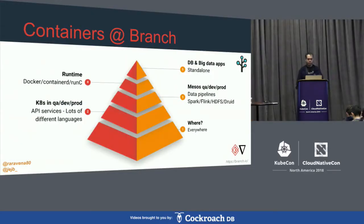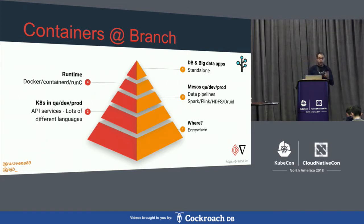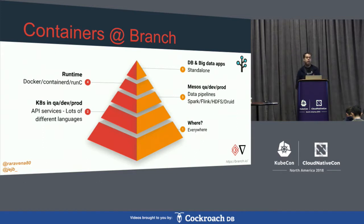At Branch, we run containers everywhere. We run Kubernetes in all kinds of environments: QA, development, and production, with server and API services in all kinds of different languages. We also run Mesos — some of our data pipelines run on top of Mesos with Spark, Flink, and Druid. Our main runtime is Docker; we run containerd. There are still some big data and database-type stateful applications we haven't containerized yet.